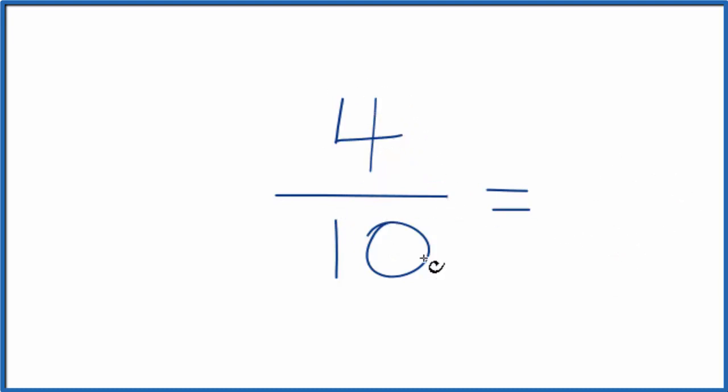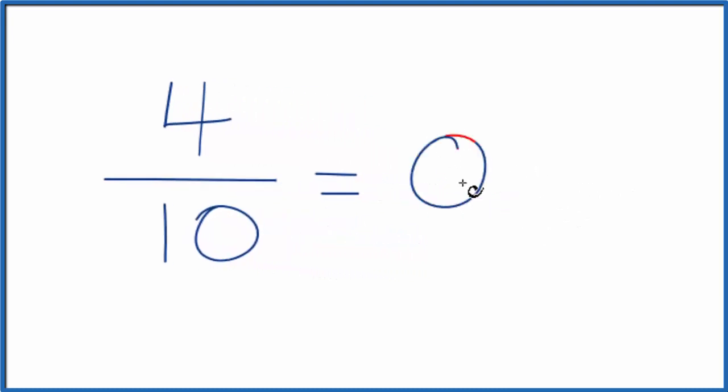You could just take 4 and divide that by 10 on your calculator. You get 0.4. So the fraction 4 tenths is equal to 0.4, the decimal.